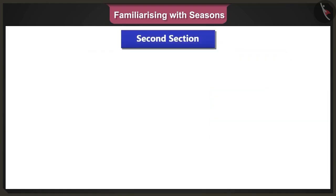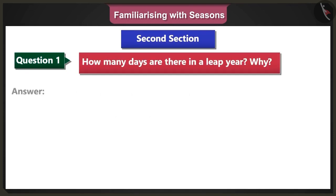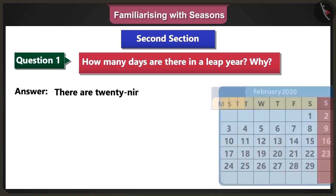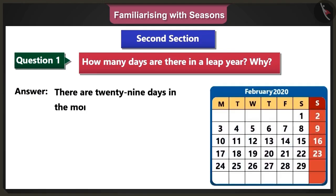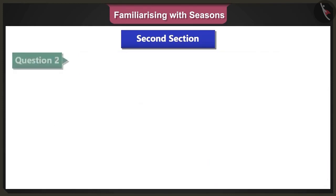First question: How many days are there in a leap year, and why? Answer: There are 29 days in the month of February in a leap year. Hence, there are 366 days in this year.